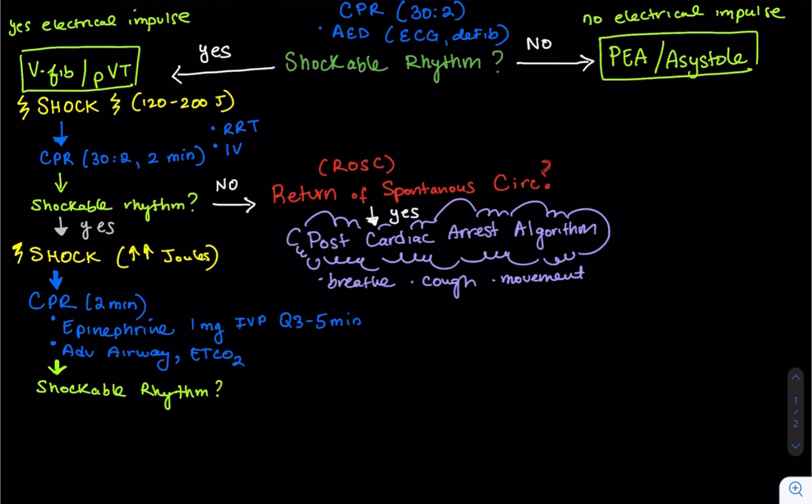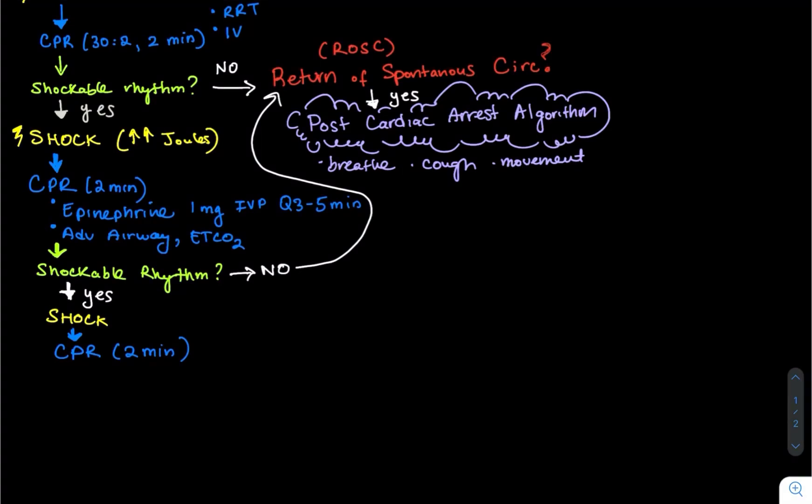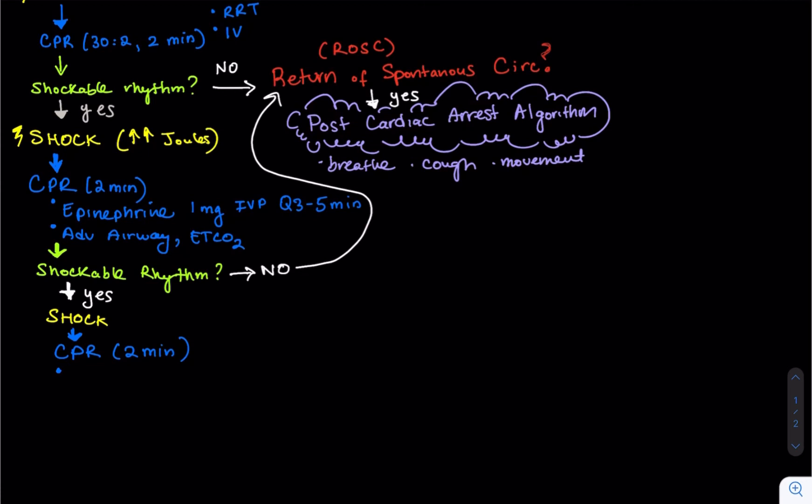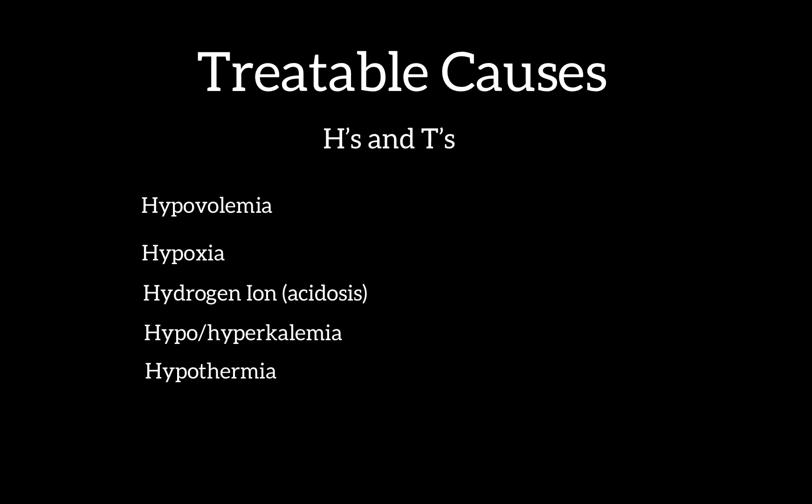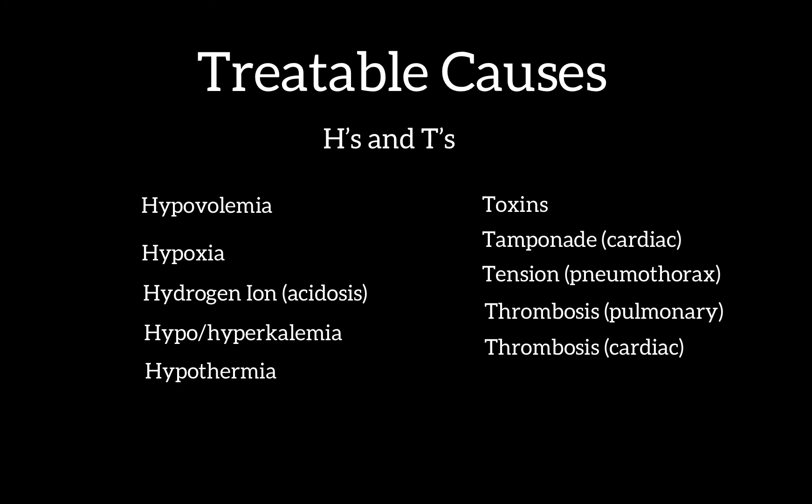Next, you're going to do another rhythm check. Is the rhythm shockable? No? Go ahead and check for ROSC. Yes, then shock and continue CPR for two minutes. Now, at this point, you want to assess for any treatable causes that might have caused the patient's cardiac arrest. And what I'm talking about is the H's and the T's. The H's: hypovolemia, hypoxia, hydrogen ion, right, the acidosis, hypo or hyperkalemia, hypothermia. Toxins. Now we're going into the T's, toxins, tamponade from the cardiac, tension pneumothorax, thrombosis pulmonary, and or thrombosis from the cardiac. So these are the H's and T's. These are things that may have caused the patient to be in a cardiac arrest.